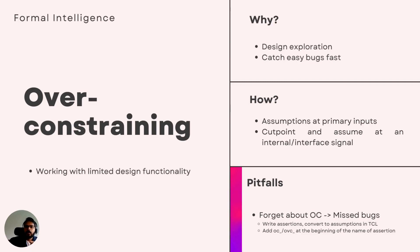There are multiple options for how to apply over-constraints. The basic option is to find the primary inputs that you're not interested in and tie them to a particular value — for example, tie an input to zero to disable that functionality. The second, more involved option, once you get to know the design better after a few runs, is to find internal signals that can be cut-pointed and given certain values so that you can over-constrain the functionality from that point onwards.